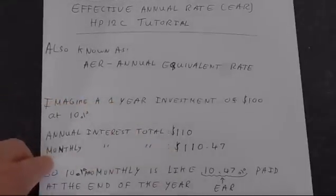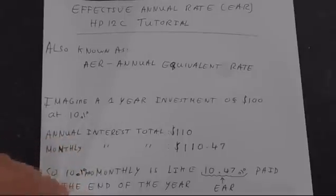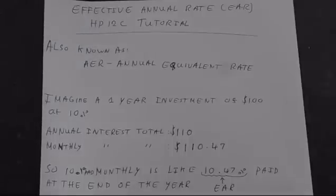Compounding monthly results in more money at the end of the period. So 10% paid every month is the same thing as 10.47% paid at the end of one year.